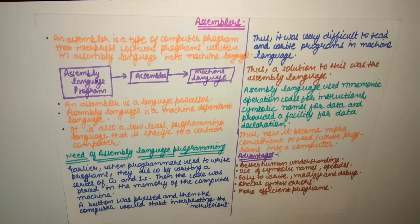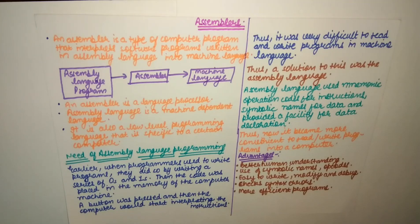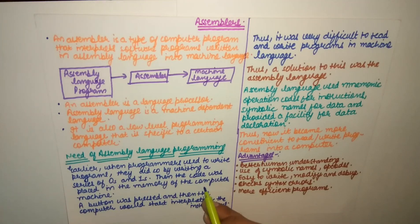Now let's discuss the need for assembly language programming. Earlier, when programmers used to write programs, they did so by writing a series of zeros and ones. For example, to add two numbers today we write 'int a, b, c; c = a + b;' in C/C++, but earlier everything — variables, operators, all symbols — had to be written in the form of zeros and ones. That code was then placed in the memory of the computer.